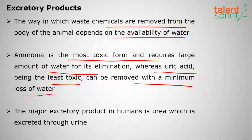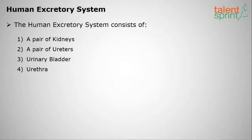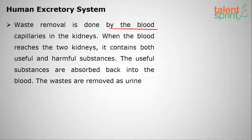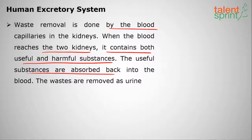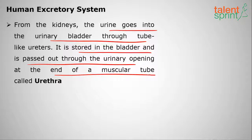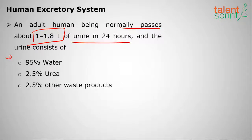The major excretory product in humans is urea, excreted in the urine. The human excretory system consists of a pair of kidneys, two ureters, one urinary bladder, and one urethra. Waste removal is done by capillaries in the kidneys. When blood reaches the two kidneys, it contains both useful and harmful substances. Useful substances are absorbed back into the blood, and wastes are removed along with water as urine. From the kidneys, urine goes into the urinary bladder through the ureters, is stored there, and then passed through the urethra. An adult human normally passes 1 to 1.8 liters of urine in 24 hours, and urine consists of 95% water.